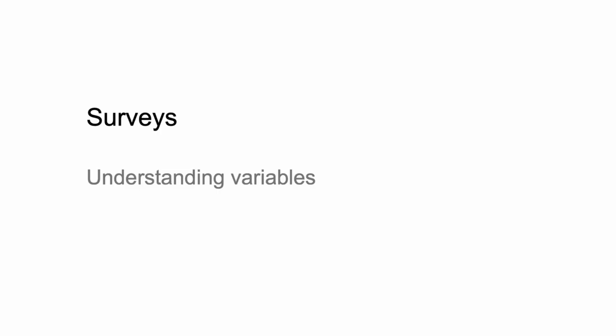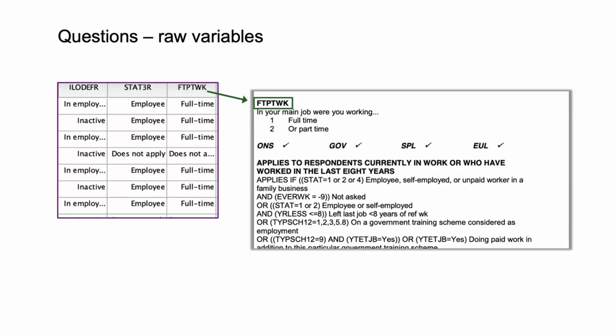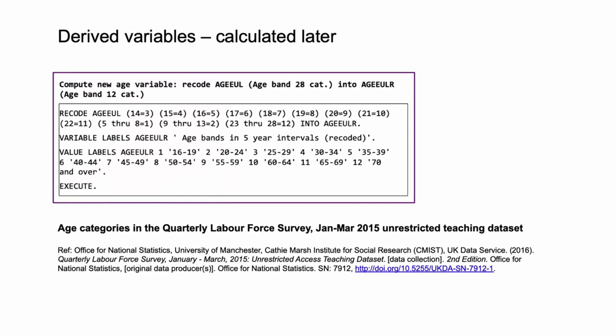Now we'll look at understanding variables. Good survey design uses questions that elicit useful responses and enable meaningful comparisons between groups to be made. A well-documented survey will allow you to trace back to the question that was asked, to see who was asked the question and how. Some of the responses are stored in their raw form in the dataset and are easy to trace back to the question asked. For example, these images show the full-time part-time work variable as it appears in the data file in SPSS and the information that appears in the questionnaire. It shows the response options, what the variable measures and who the question applies to and was asked to. Other variables may instead be the result of some sort of calculation or processing after data collection was completed. These are known as derived variables, and documentation held in archives with the data should be able to help you to interpret the meaning of these variables, probably through allowing you to understand how the derived variable in the data relates to the original questions asked.